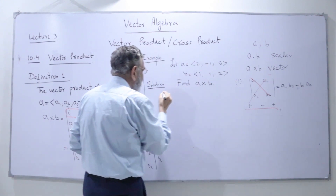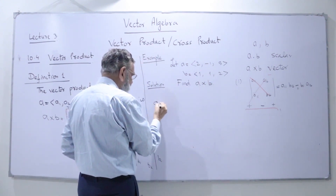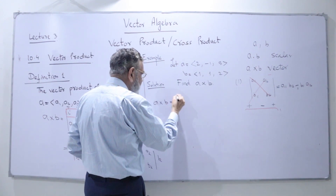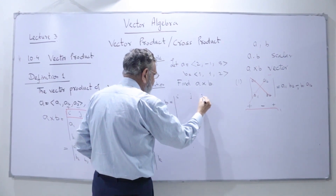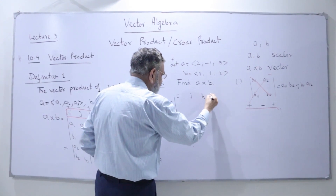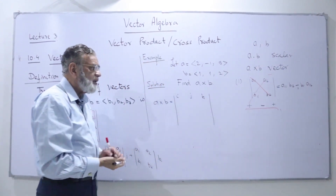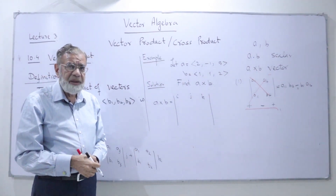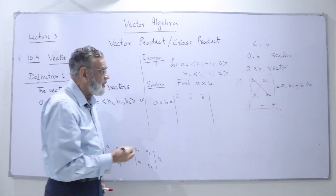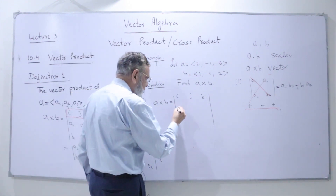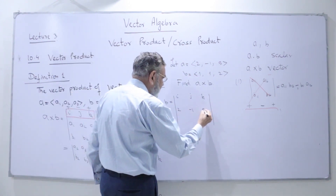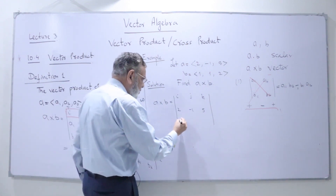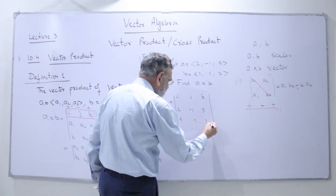So we are having here the cross product a cross b. As we defined, we get here the determinant with i, j, and k — the unit vectors along the x-axis, y-axis, and z-axis. The components of a are 2, -1, and 5, and the components of b are 1, 1, and 2.